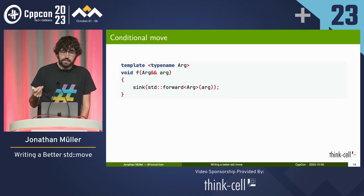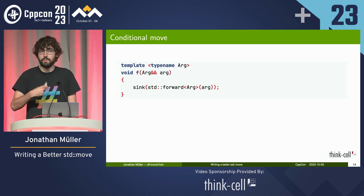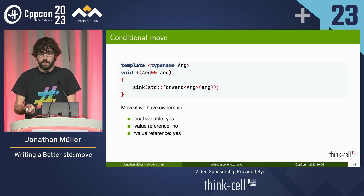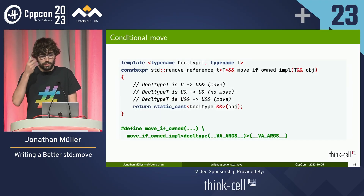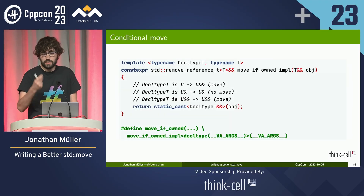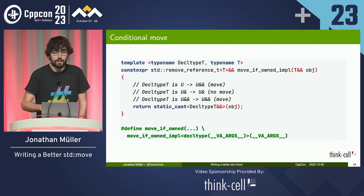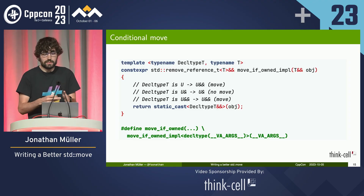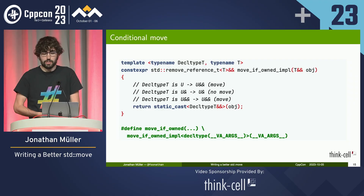Finally, there's forward — sort of a conditional move. If we have ownership, we want to move it; if not, we want to keep it as-is and copy. We have ownership for local variables and R-value references, but not L-value references. The implementation of move_without just takes the decltype under some reference collapsing rules — essentially this is an implementation of std::forward, just called move_without. It behaves slightly differently with local variables, but is essentially forward of decltype of the thing, named accordingly because it does a conditional move.